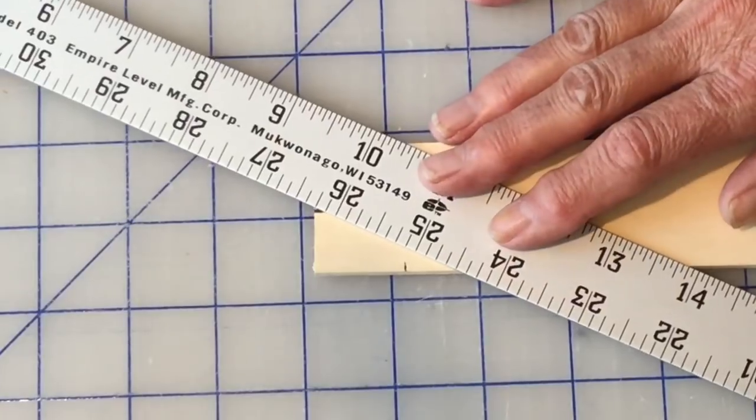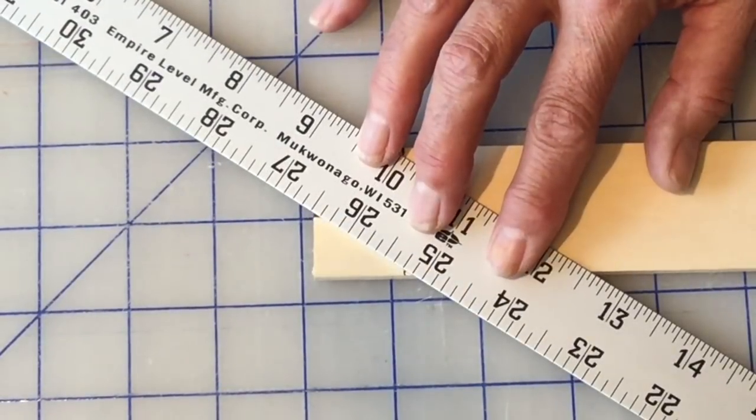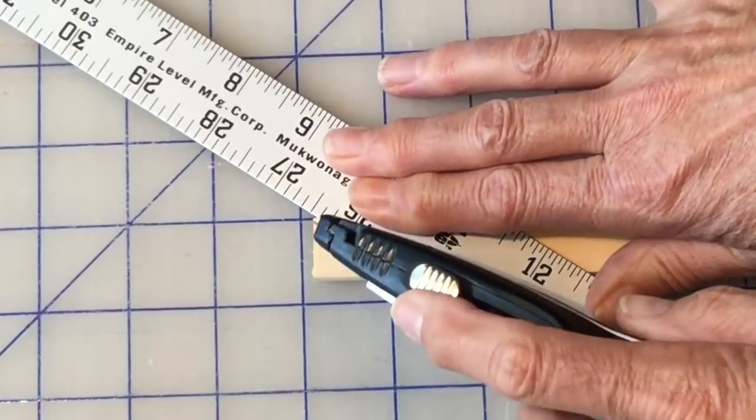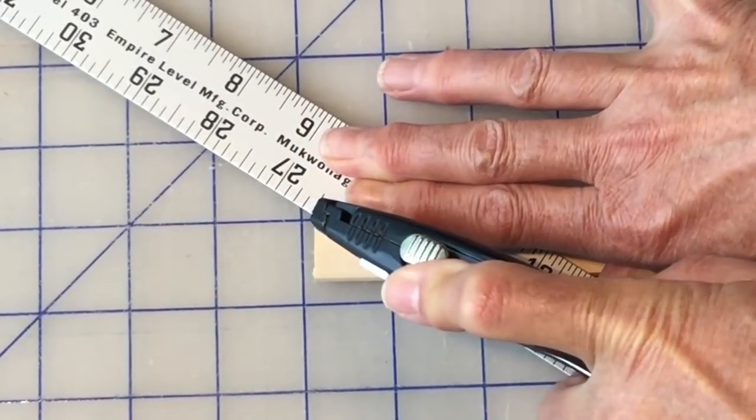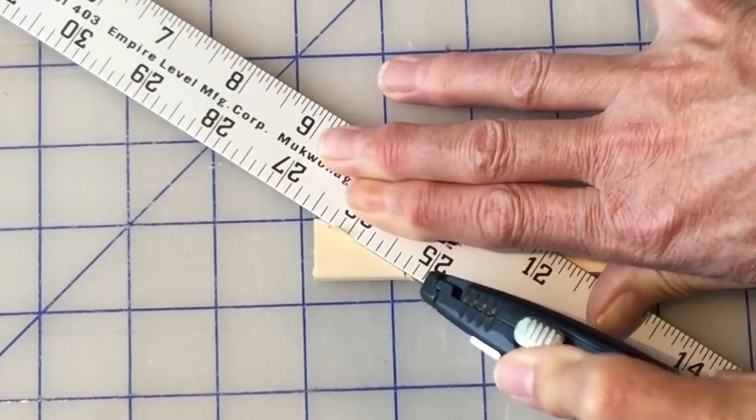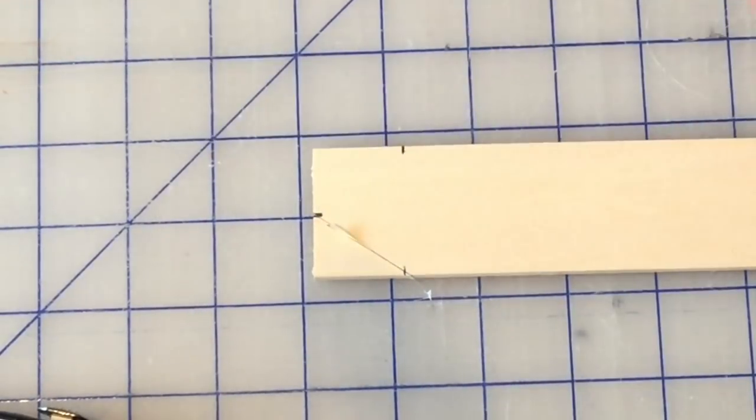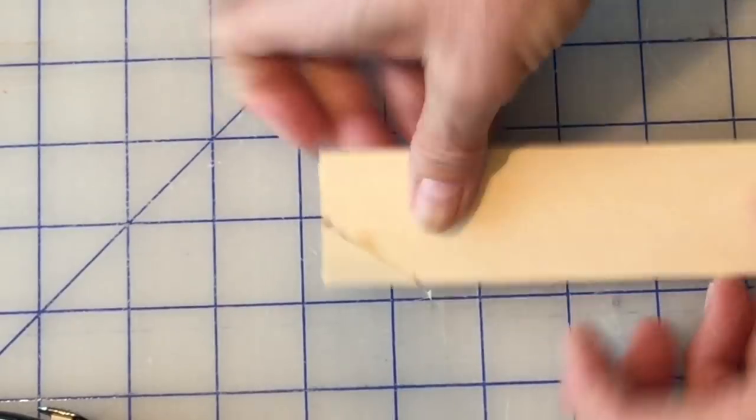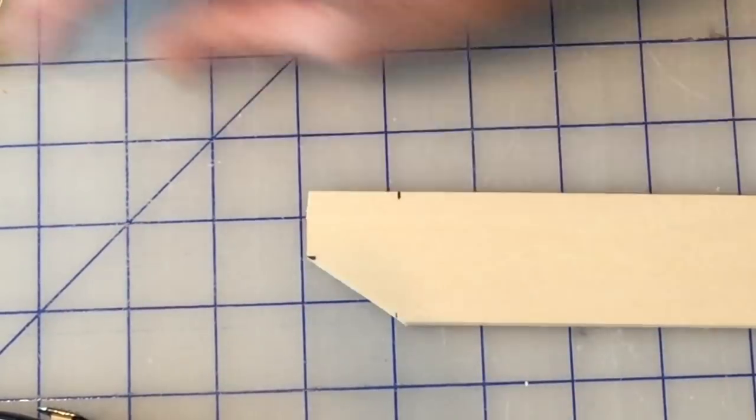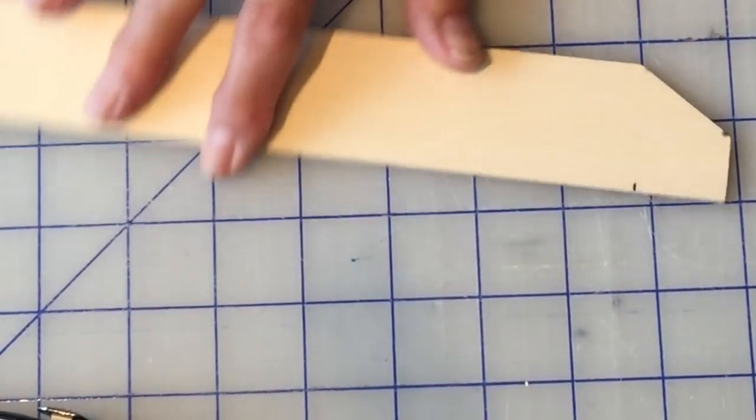Now I can take my metal ruler and match up my two marks. And again with a utility knife, draw through a couple times. That just pops right off.